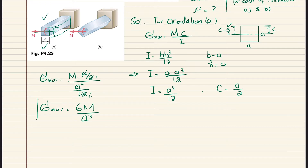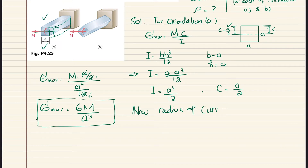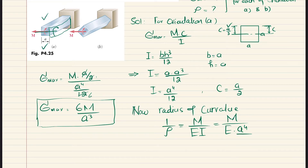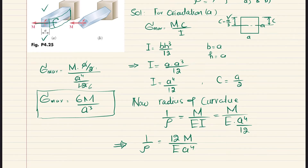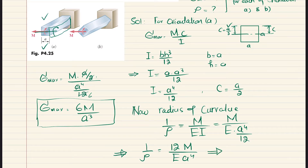For the radius of curvature, we know that 1/ρ (curvature) equals M over E·I. With I equal to a⁴/12, we get 1/ρ equals 12M over E·a⁴. Therefore the radius of curvature ρ equals E·a⁴ over 12M. This completes part A.